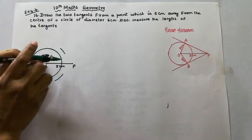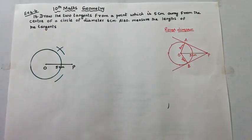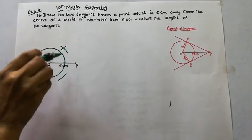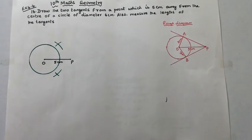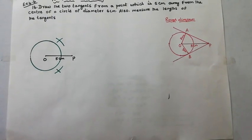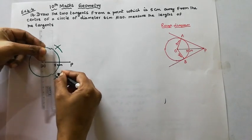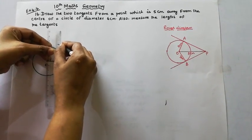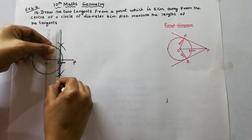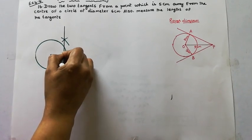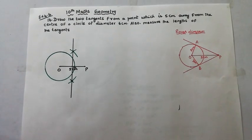Now follow through the construction steps — draw the arcs from both ends alternately to find the perpendicular bisector. Now the perpendicular bisector is drawn. Here we have one circle, and we have to draw the second circle using the midpoint of OP.